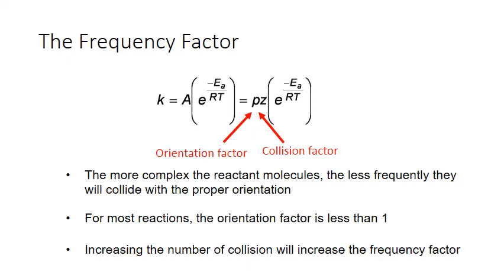In general, the more complex the molecules colliding, the less likely they'll collide in the correct orientation for the reaction to occur. For most reactions, the orientation factor is less than one. When this orientation factor is multiplied by the collision factor, it lowers the value of A overall — our frequency factor. And a lower value of A means that we have a lower value of our rate constant, k.